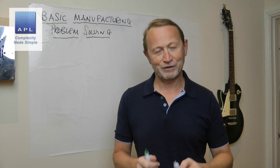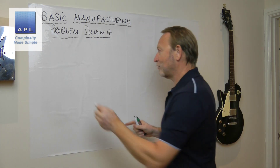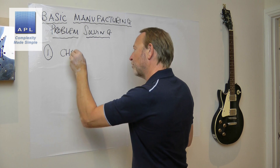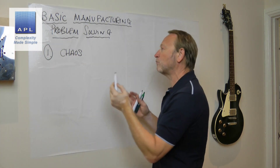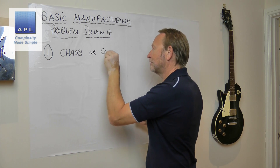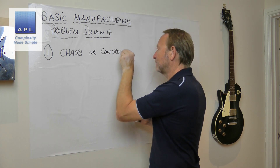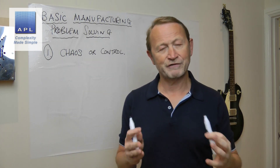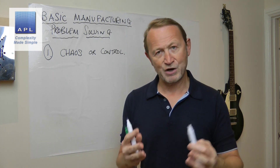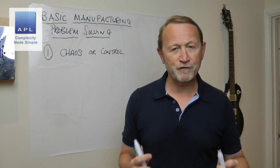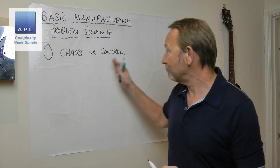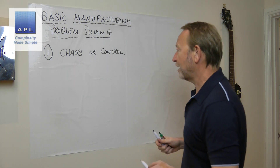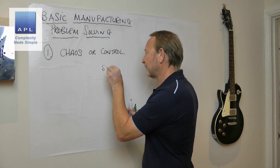So in basic manufacturing problem solving, here's where you start. Point one: what is it you're trying to fix? What's the state of your process — is it chaos or is it control? I'm going to say this in a number of different ways, use different phrases, and then make a point with some diagrams. What I mean by this phrase: is it chaos, or is it control?